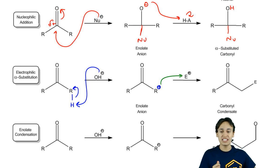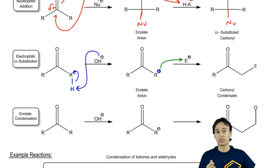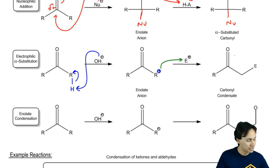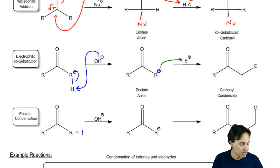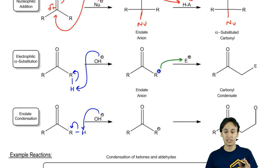What we're going to learn in this section is how enolates relate to condensation reactions. It turns out that same thing when a base deprotonates an alpha carbon, you're going to get an enolate.